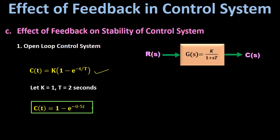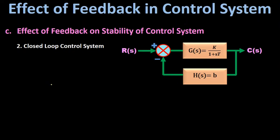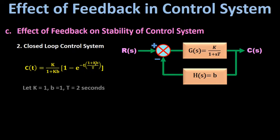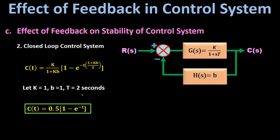In the open-loop output response equation, if we put K equal to 1 and time constant T equal to 2 seconds, then C(t) equals 1 minus e to the power minus 0.5T. For the closed-loop negative feedback control system, the output response C(t) equals K divided by 1 plus K·B, multiplied by 1 minus e to the power minus T·(1 plus K·B) by T. Substituting K equal to 1, B equal to 1, and T equal to 2 seconds gives C(t) equal to 0.5 into 1 minus e to the power minus T.